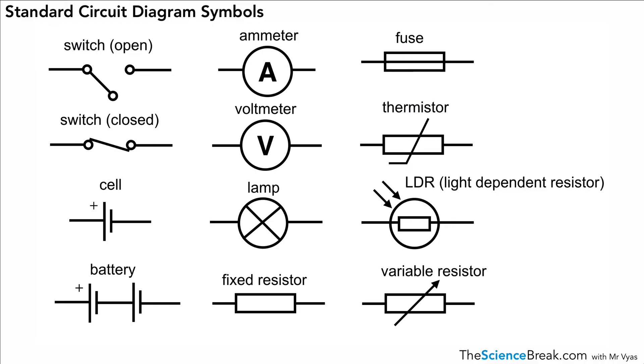Here we have a variable resistor. Our fixed resistor has a fixed value, but this resistor can change in value. If you have dimmer switches at home, that's likely to be a variable resistor changing the brightness of your light by changing the current.